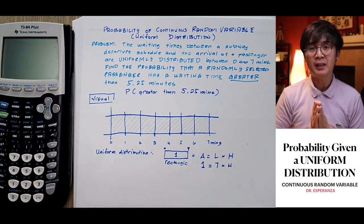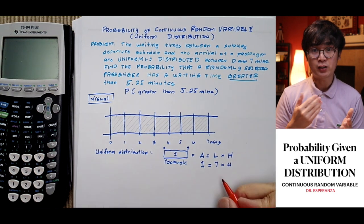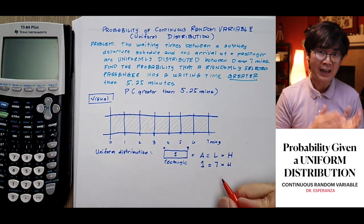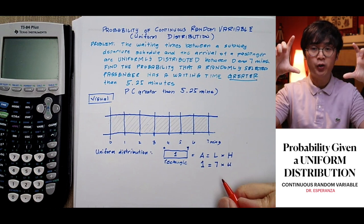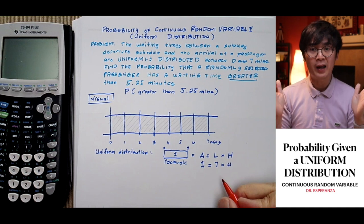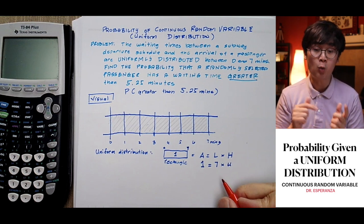since it resembles a rectangle, we'll use our lessons on geometry and algebra to get the height of our distribution. For the area, since this is a probability distribution, it's always equal to 100% or 1.